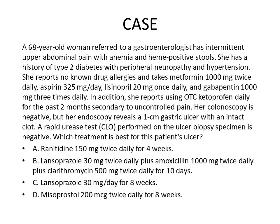The next case is a 68-year-old woman referred to a gastroenterologist with intermittent upper abdominal pain with anemia and positive stools. She has a history of type 2 diabetes with peripheral neuropathy and hypertension. She reports no drug allergies and takes metformin 1 mg twice daily, aspirin, lisinopril, and gabapentin.